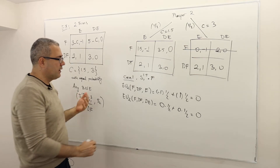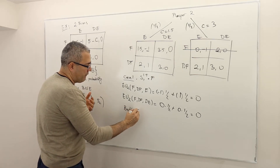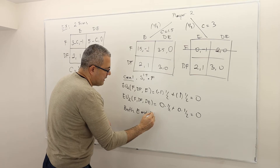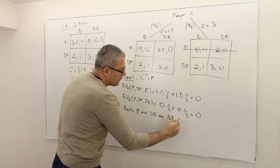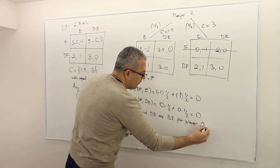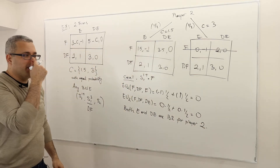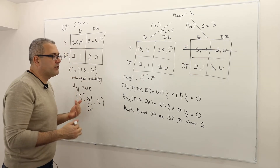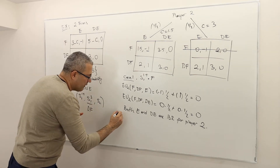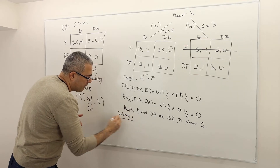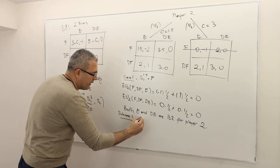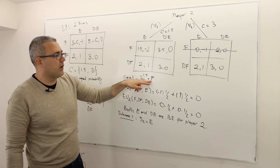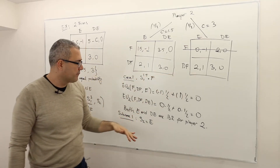So what does that mean? That means both E and DE are best responses for player 2. That means I couldn't eliminate any strategy of player 2. So that means I actually created two more cases — subcase 1 and subcase 2. Subcase 1 is that S2 equals enter.